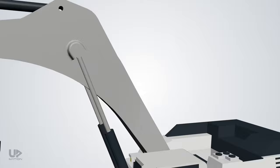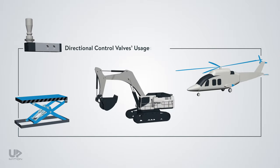The valves we are going to check are helping us in various stationary industrial systems such as this hydraulic lift, mobile applications such as construction machinery, or even aviation industries like this chopper.